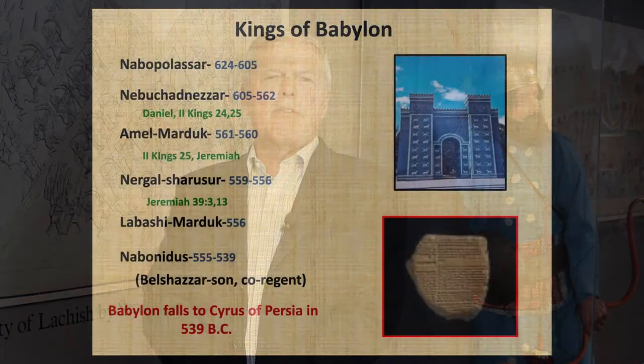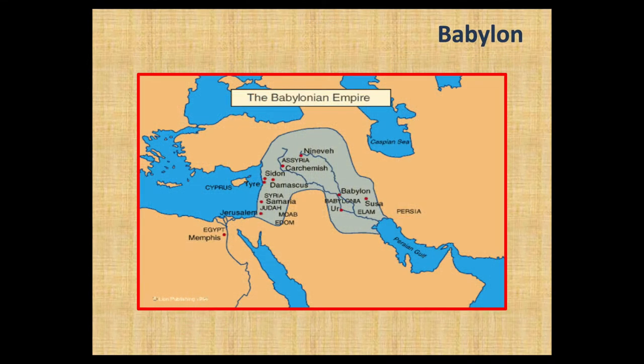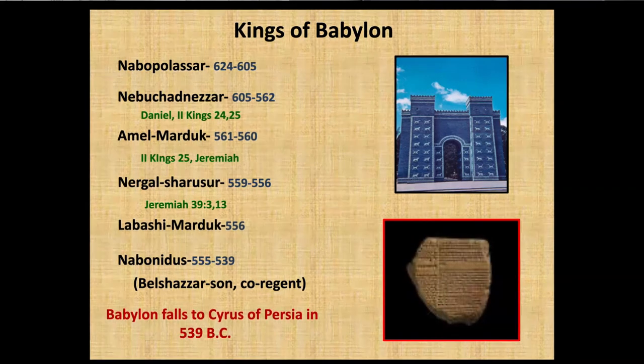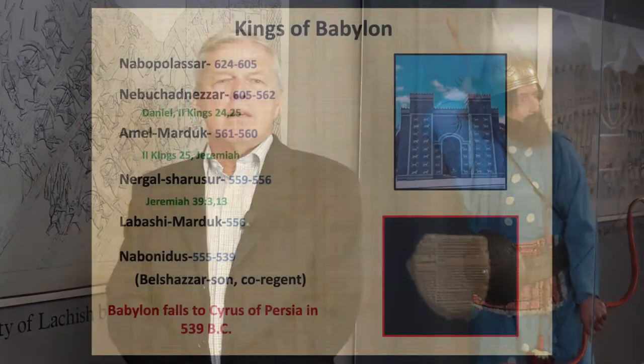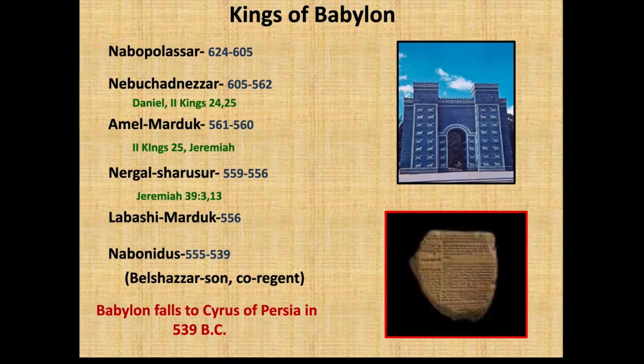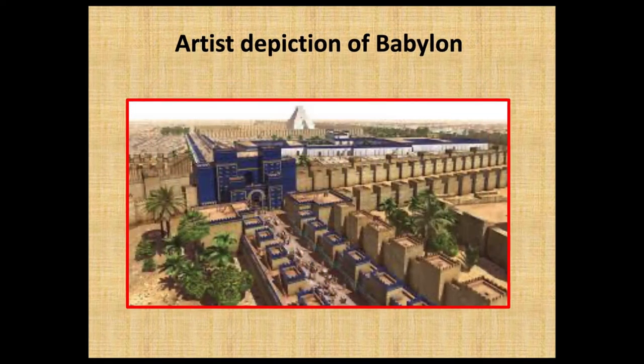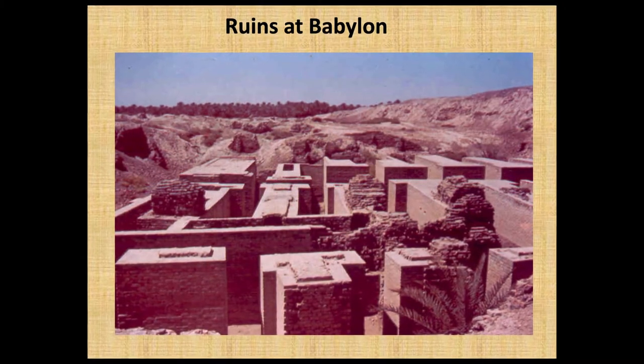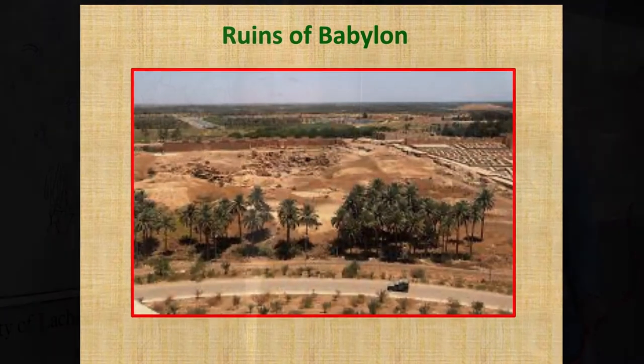Babylon conquered Nineveh and the Assyrian Empire fell in 611 BC. Babylon was the next great world power, and they also had much contact and conquest in Israel. Several kings of Babylon are mentioned on inscriptions and also in the Bible: Nebuchadnezzar, Amel-Marduk, Nergal-Sharezer, and Nabonidus — all mentioned in the Bible. You can still see in Iraq to this day the ruins at Babylon of a very great capital city. Babylon falls to Cyrus in 539 BC.